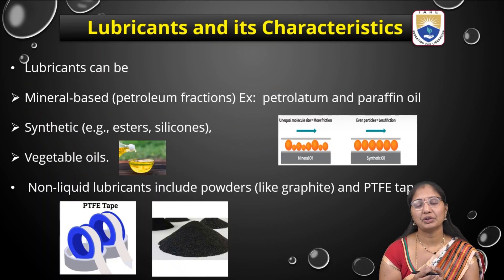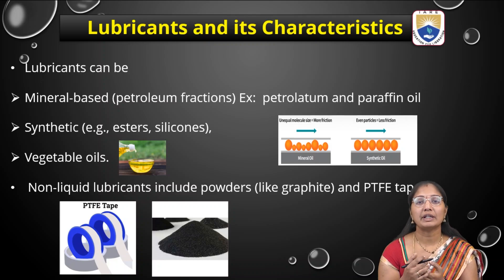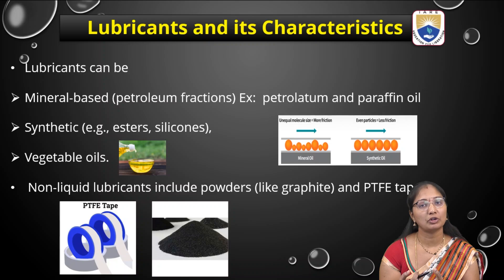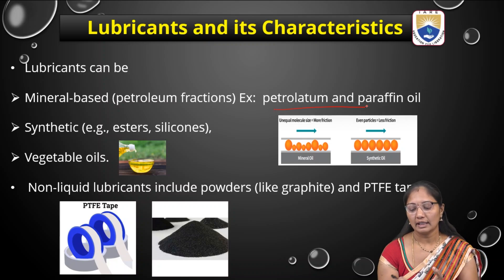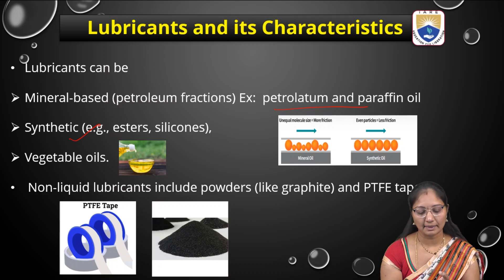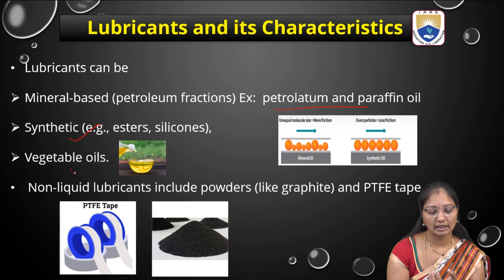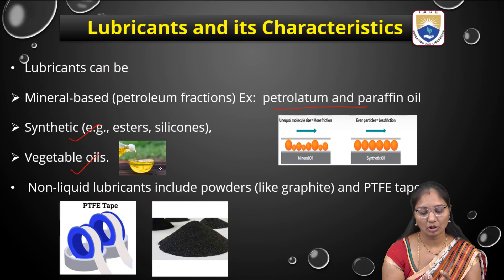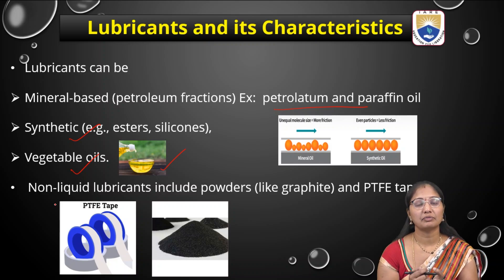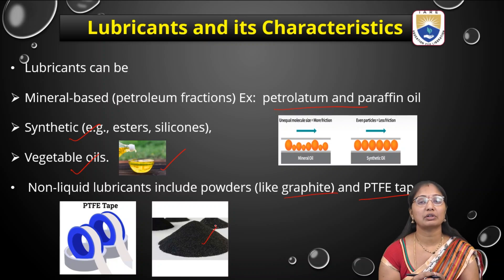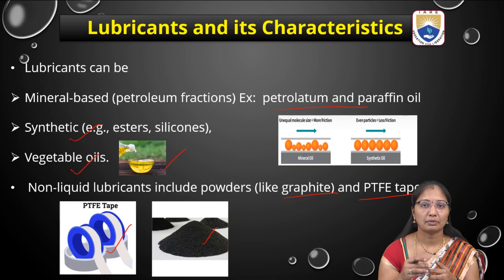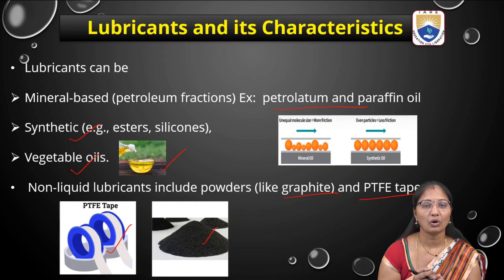What are the lubricants in terms of their chemistry? They may be mineral oils — petroleum byproducts such as paraffin oil. They may be synthetic, such as esters or silicones or grease. Another type is vegetable oils, which may be normal paraffin oils, olive oils, or castor oils. And there are non-liquid lubricants in solid form, such as graphite powder and PTFE tape, commonly known as Teflon tape, which is used to seal components or machinery to reduce friction.